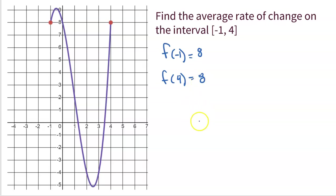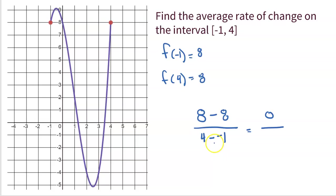To find the average rate of change, we're simply going to subtract our outputs on top: eight minus eight. And subtract our inputs in the denominator: four minus negative one. Eight minus eight is zero, and four minus negative one is five. Regardless, we get zero. That actually makes complete sense, because if we draw a line connecting the beginning point to the ending point, the average rate of change is exactly that — the slope of that line connecting the two points. The slope of that line is clearly zero. So although in between the function is going up, coming back down, and going back up, the average rate of change from the beginning to the end of this function is zero.